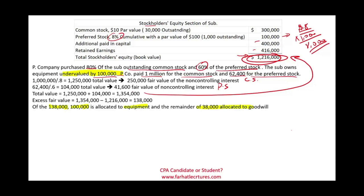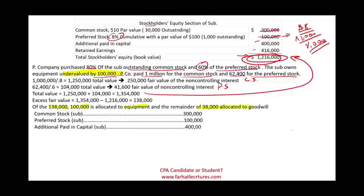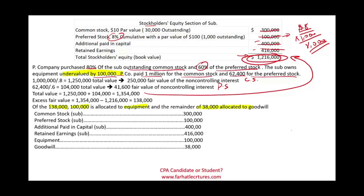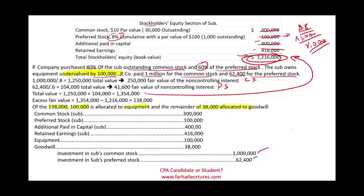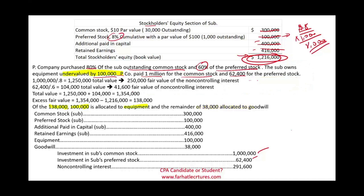Now we're ready to prepare the consolidation entry. When we consolidate, we must remove the subsidiary's equity: debit common stock $300,000, preferred stock $100,000, additional paid-in capital $400,000, and retained earnings $416,000 — all gone. We also debit equipment for the additional $100,000 and debit goodwill for $38,000. Then we credit the investment in sub common stock ($1,000,000) and investment in sub preferred stock ($62,400). Finally, we establish non-controlling interest of $291,600, which equals $250,000 NCI common plus $41,600 NCI preferred.